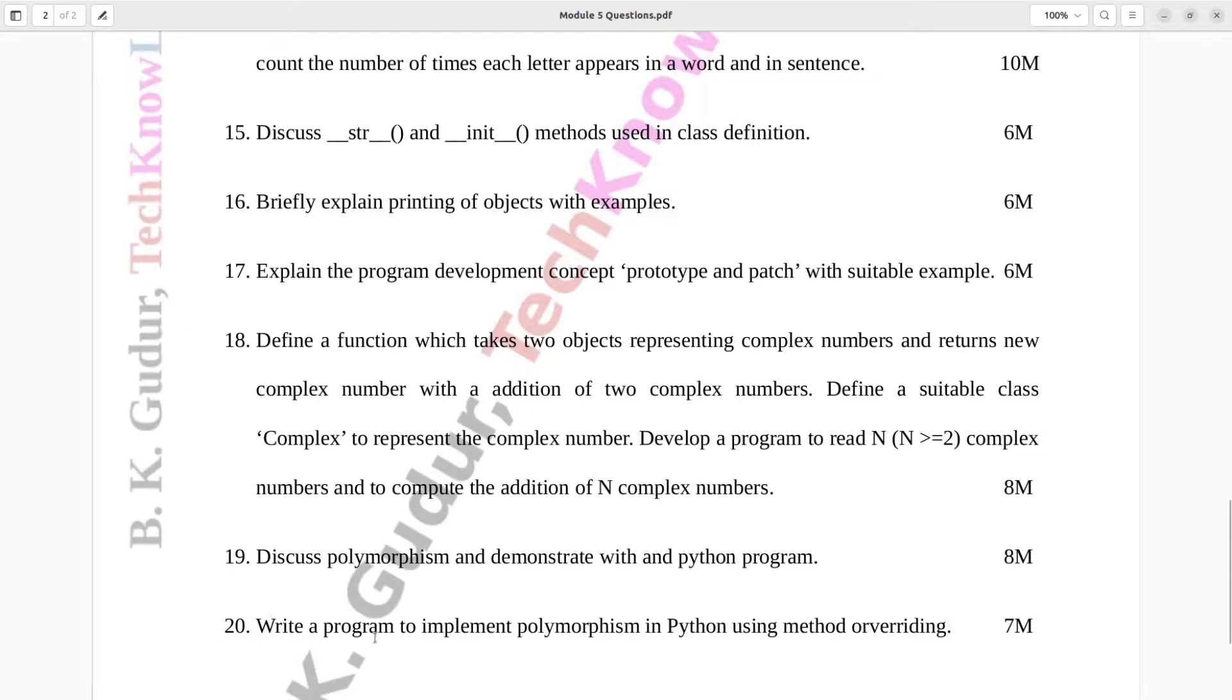Question number twenty. Write a program to implement polymorphism in Python using method overriding. Seven marks.